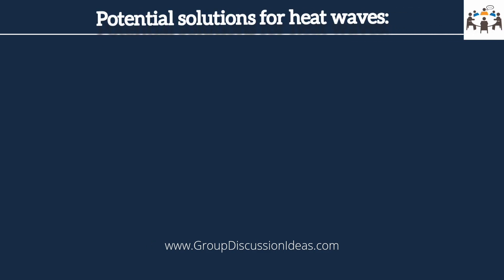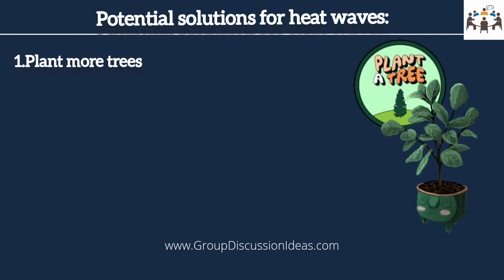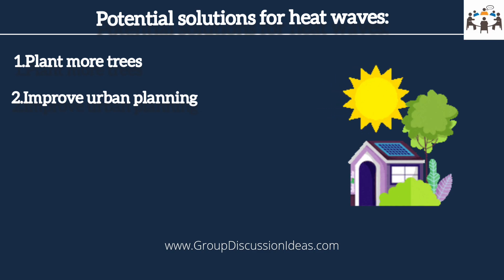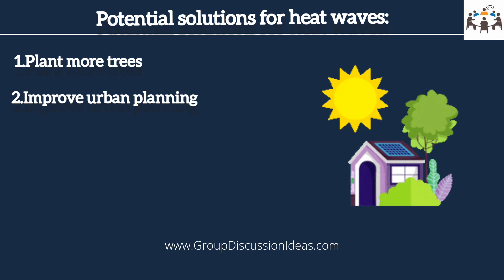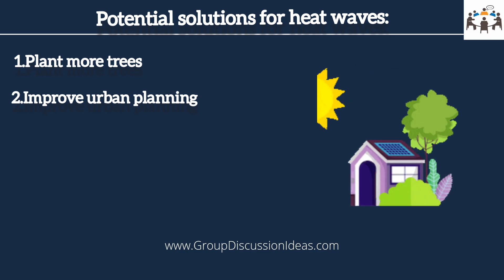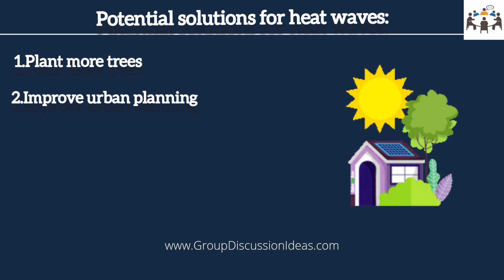What are the potential solutions for heat waves? We must plant more trees. Trees can provide shade and help cool down urban areas, and they also absorb carbon dioxide from the atmosphere, which helps reduce the greenhouse gas effect. Cities can also improve urban planning by incorporating green roofs, using reflective materials on buildings, and increasing the amount of green space to reduce the urban heat island effect.